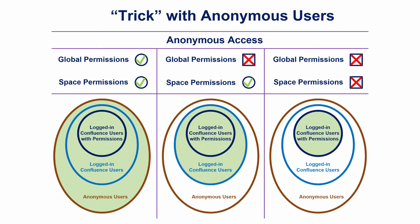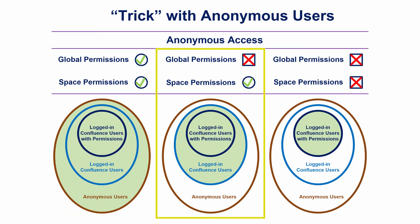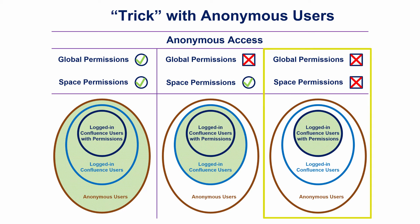There is also another important peculiarity about anonymous access in Confluence. Let's assume we have three categories of users: logged-in users with appropriate permissions to access a certain space, logged-in users without proper permissions, and anonymous users. If we enable anonymous access in global permissions and give public access to a certain space, all of them will access the space. If we disable anonymous access in global permissions but leave public access to the space enabled, we get a so-called trick: anonymous users will not access the space, but logged-in users without proper permissions will. The third option: if we disable anonymous access both in global and space permissions, only logged-in users with appropriate permissions will be able to access the space.